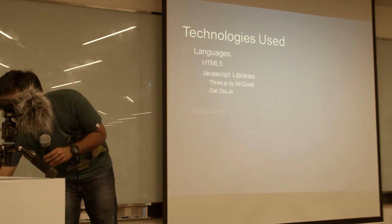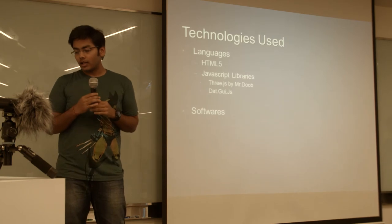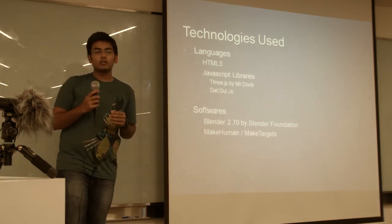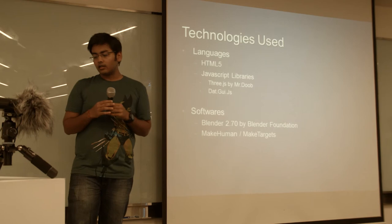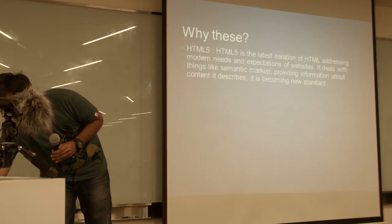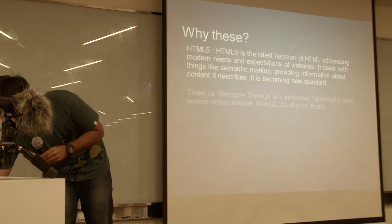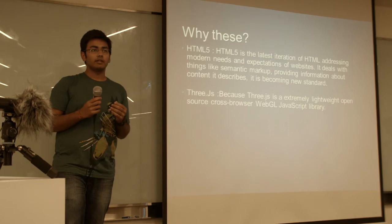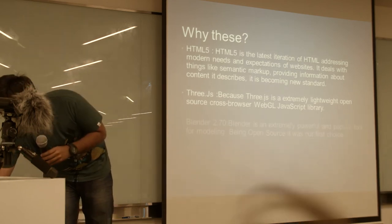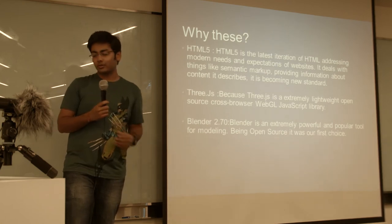Basically I use HTML5 and the Three.js library to work with the web because it's really easy and quite powerful — I was amazed at what we can do with it. For modeling I use Blender 2.7 software, and MakeHuman or make targets to change the body from one form to another. I chose these because HTML5 is the latest standard, Three.js is extremely lightweight compared to other frameworks, and I already knew Blender so I didn't need to learn something new.